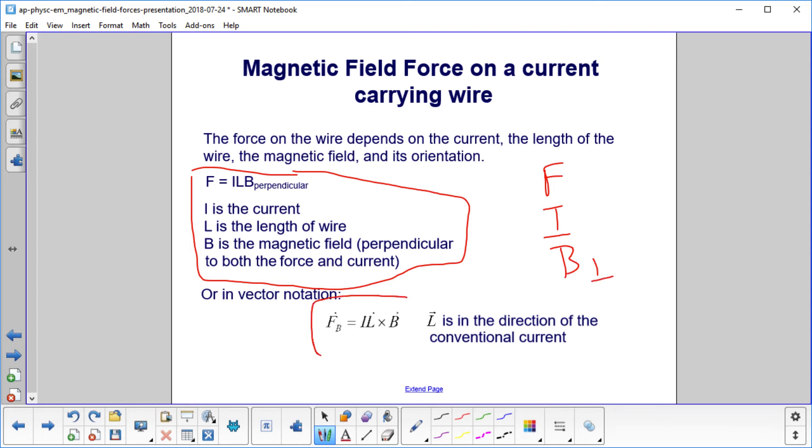A better way to write this in vector notation is F equals IL cross B, where L, the vector L, is in the direction of the conventional current and is also the length of the wire.